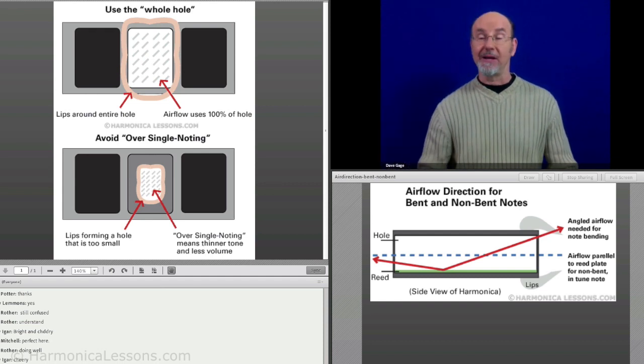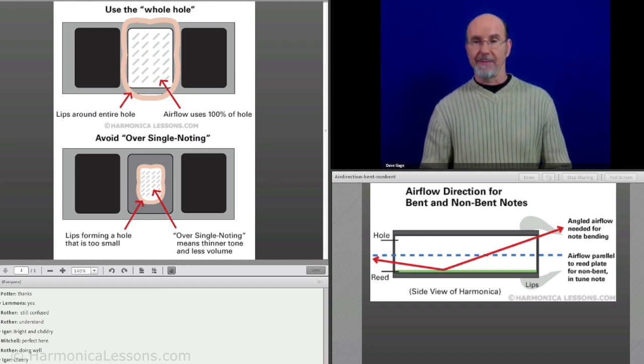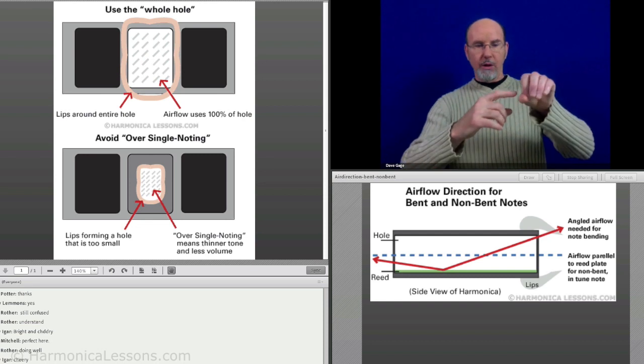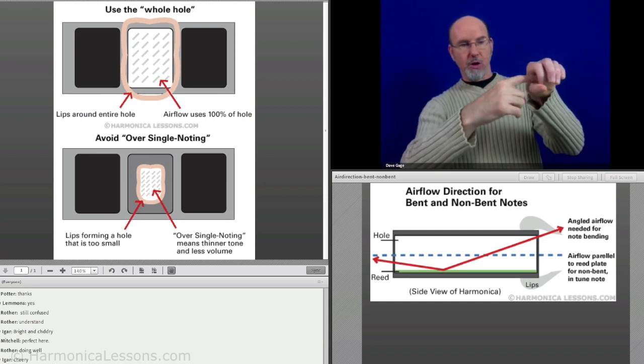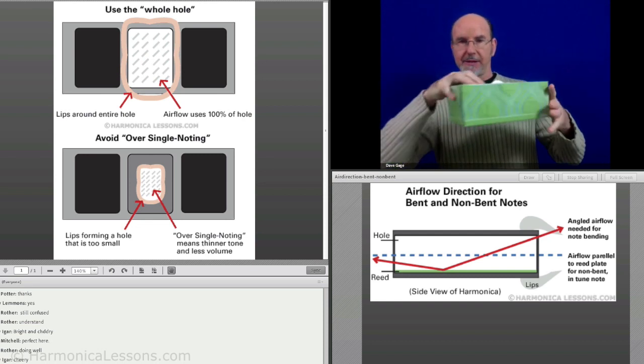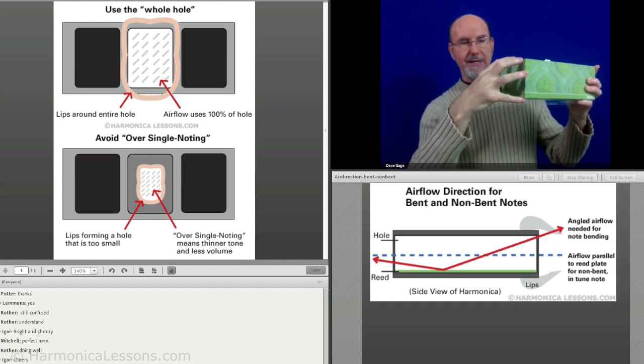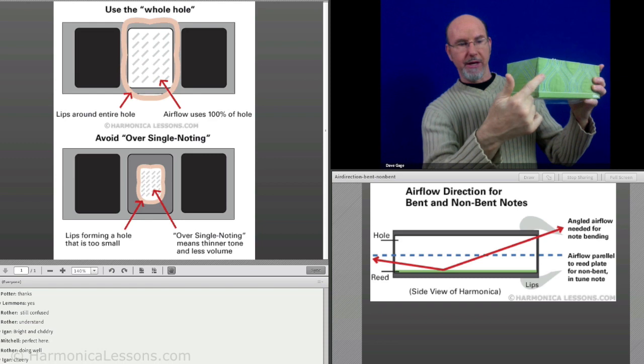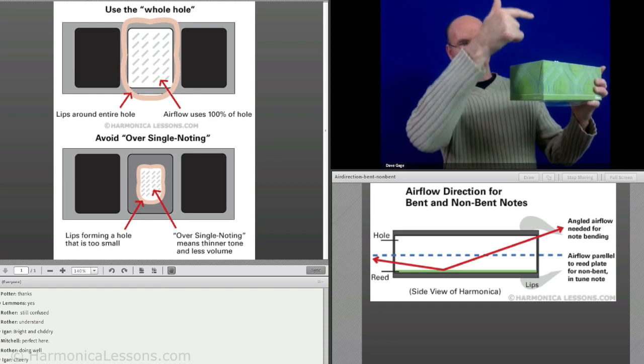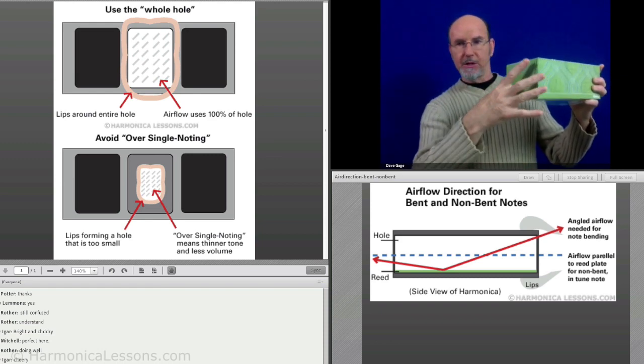Look at the graphic right under me. This is the hole of the harmonica. Again, this is the big prop here, this is the hole of the harmonica. Our mouth is right here, corners of our mouth are here and here, and the lips are up here and here.